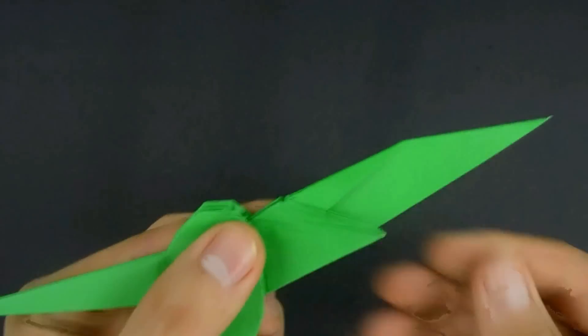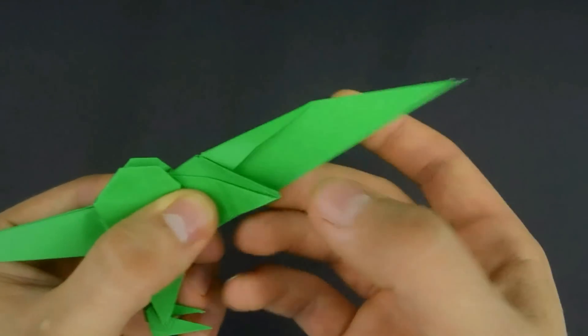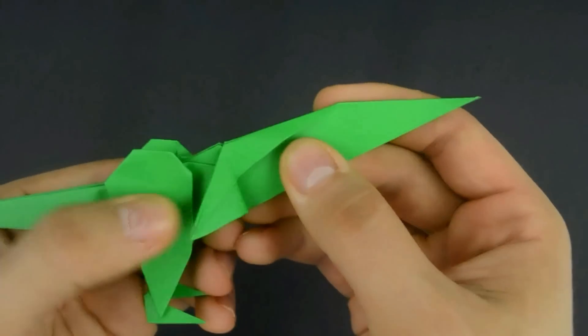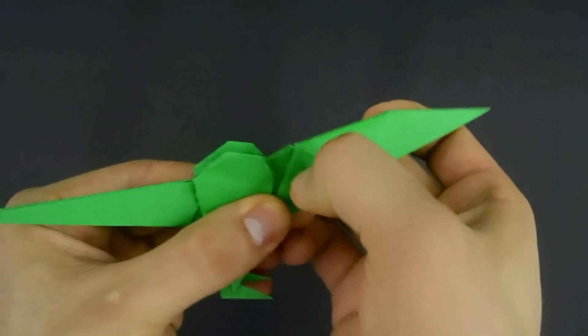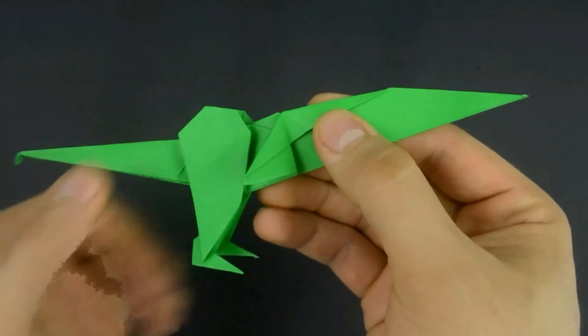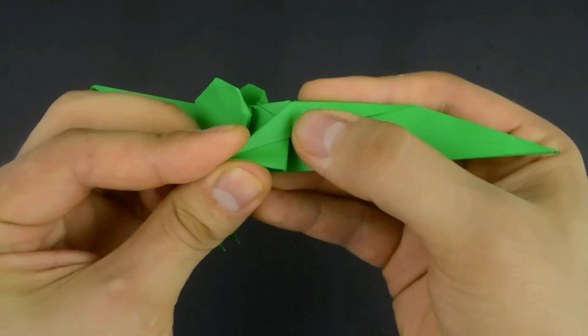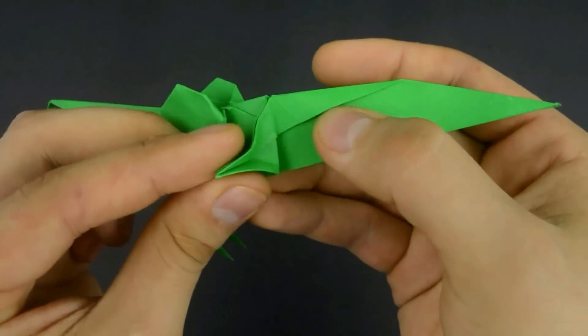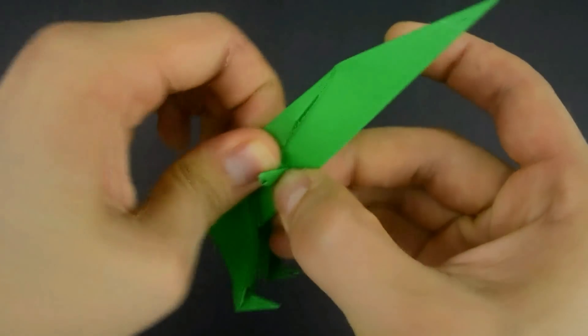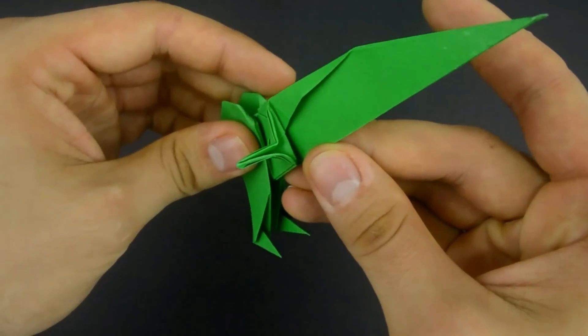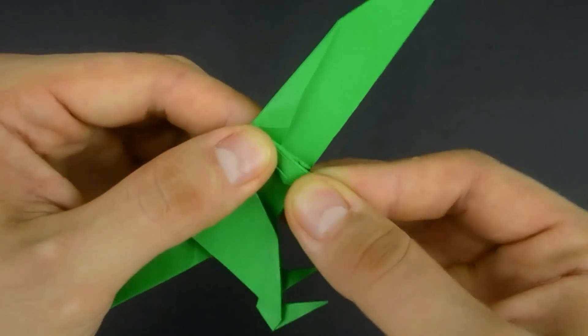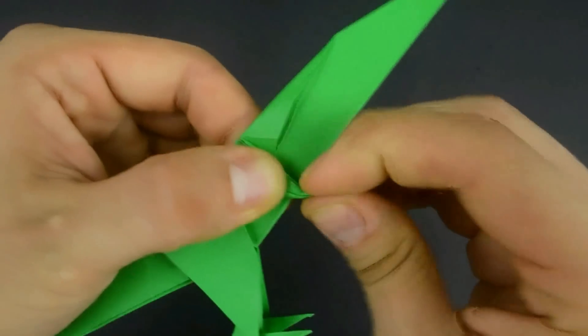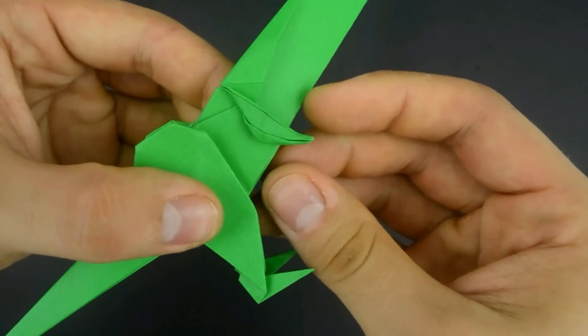Now to make the detail of the arm, bring this corner back and bring one side to the other, closing as a new little tip. Repeat on the other.